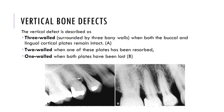Vertical bone defects are defined as three-wall defects when they are surrounded by three bony walls and both the buccal and lingual cortical plates remain intact. Two-wall defects occur when one plate has been resolved, and one-wall defects when both plates have been lost. It can be difficult to detect these using a radiograph alone, and clinical examination must be used to complement radiographic imaging for a complete diagnosis of periodontal diseases.